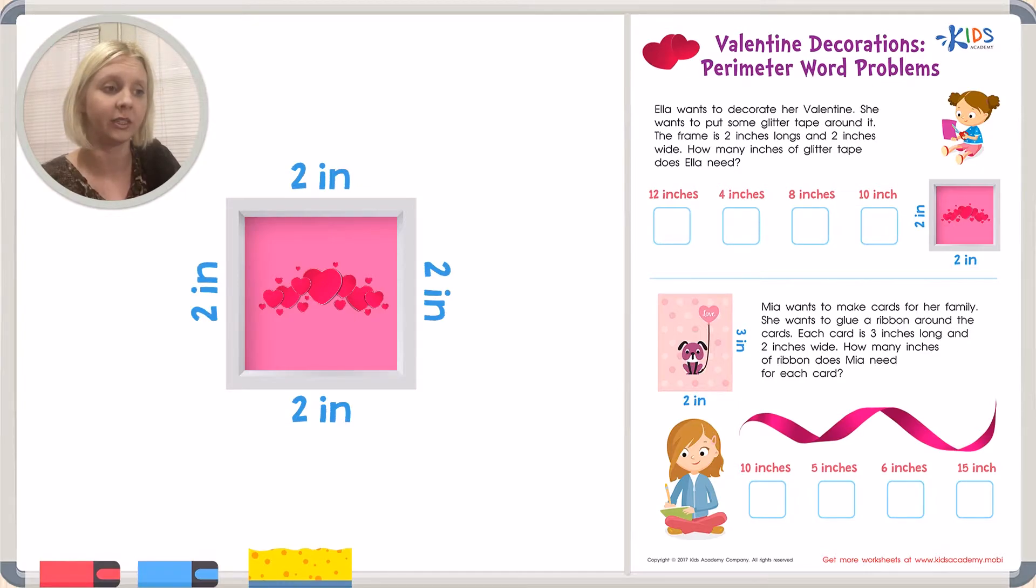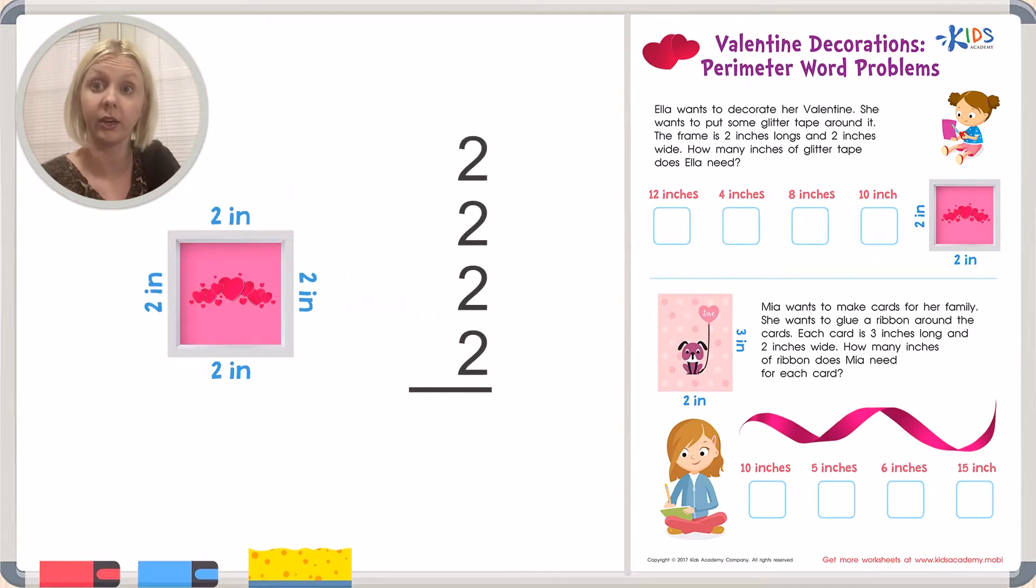Now because this is a square, I can take 2 and I can multiply that by 4 because there's 1, 2, 3, 4 sides. That's one way we could do it. Or I could take 2 plus 2 plus 2 plus 2. Which way do you want to do it? Do you want to try just adding it up? Let's do that.